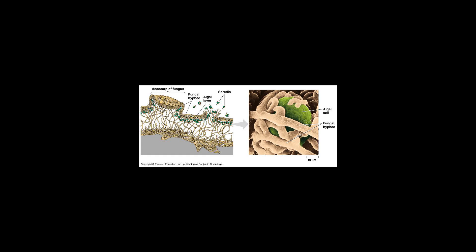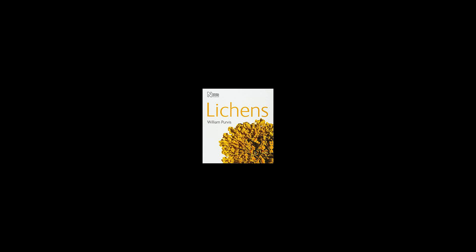Trebouxia, once included here, is now considered to be in a separate class: Trebouxiophyceae. Trebouxioid refers to members of this class or algae resembling them. Trebouxioid means a chlorococcoid green algae photobiont is in the genus Trebouxia, or resembles a member of the genus, and is therefore presumably a member of the class Trebouxiophyceae.